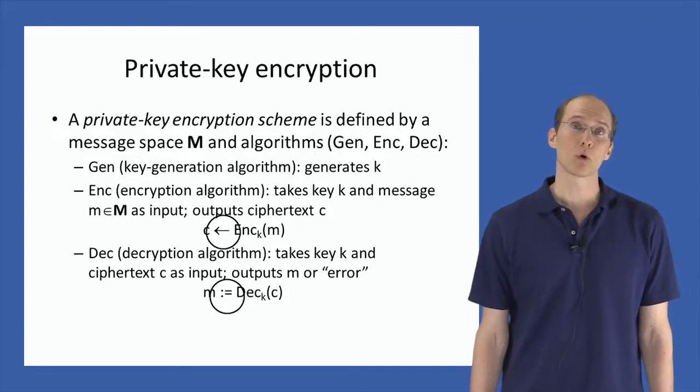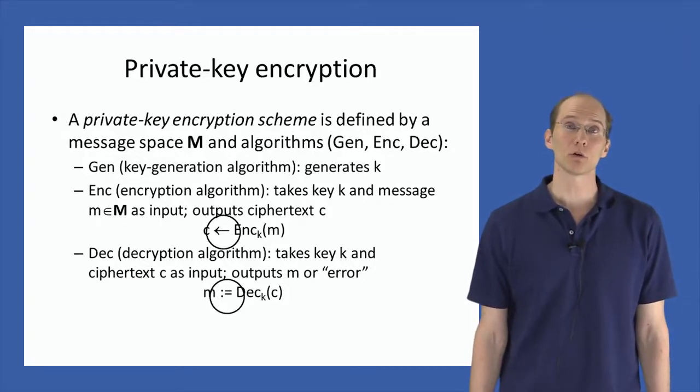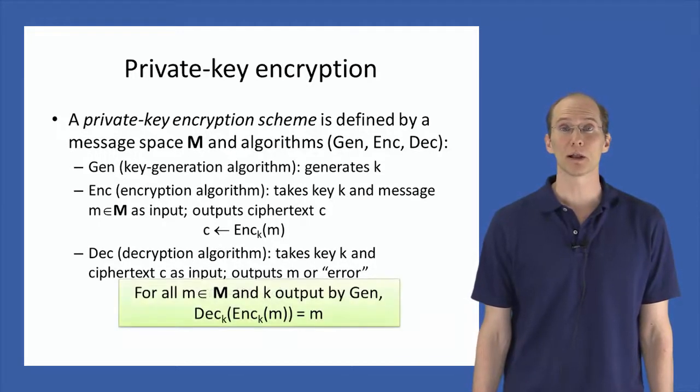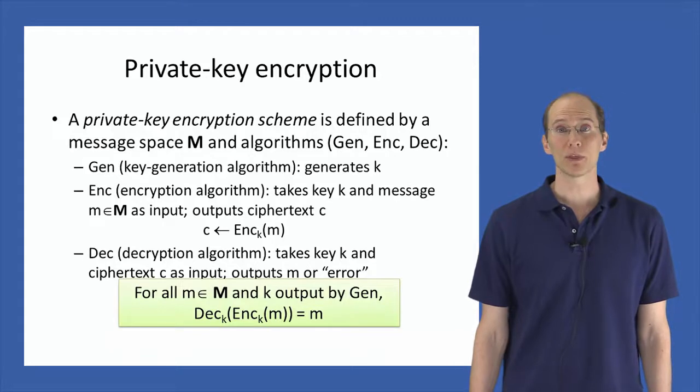Any encryption scheme is required to satisfy the following basic correctness requirement. For any message M in the message space and any key K output by the key generation algorithm, if we encrypt M using K to obtain some ciphertext and then decrypt that ciphertext using the same key, we should get back the same message we started with.